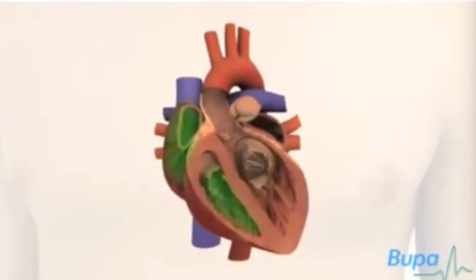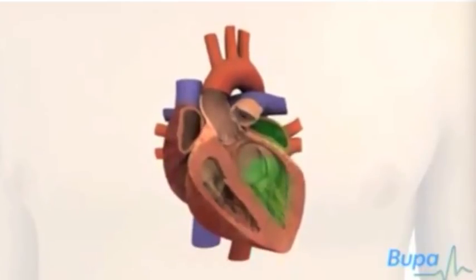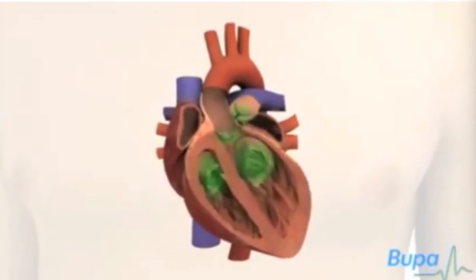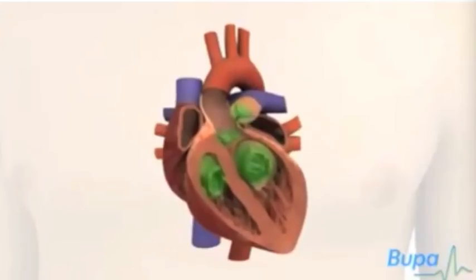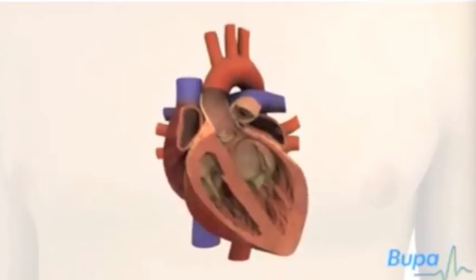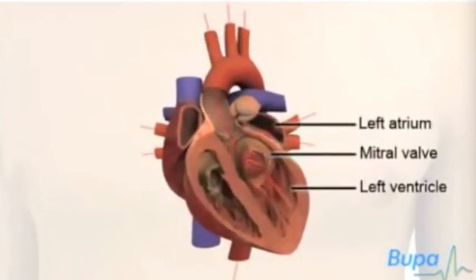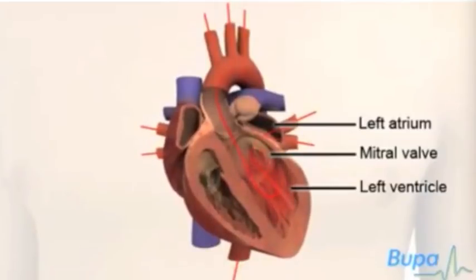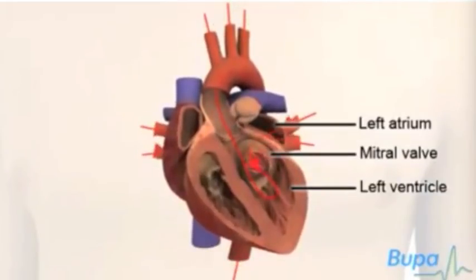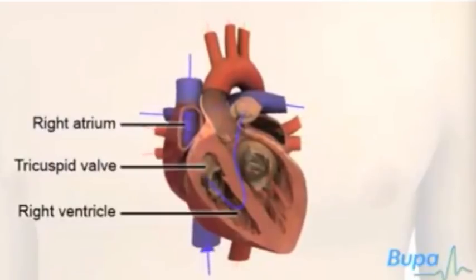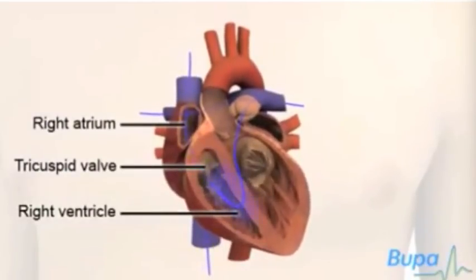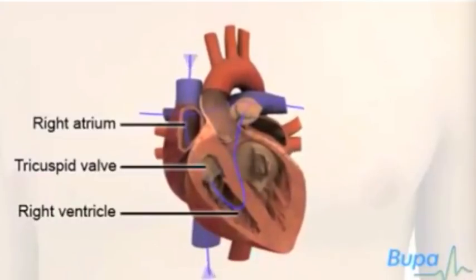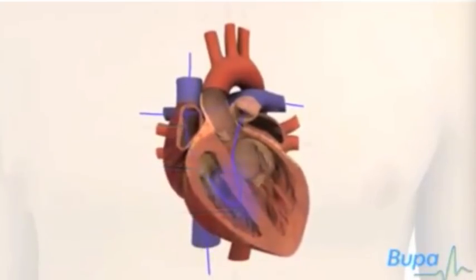A valve lies at the exit of each chamber. These valves ensure that blood flow is only in one direction. The left atrium lies above the left ventricle; the two chambers are separated by a valve called the mitral valve. The right atrium is above the right ventricle, and these two chambers are separated by the tricuspid valve.